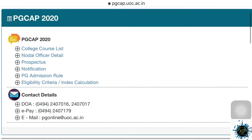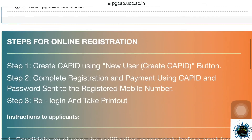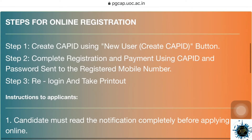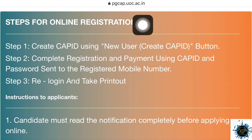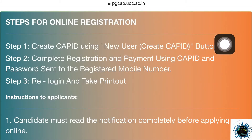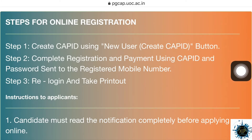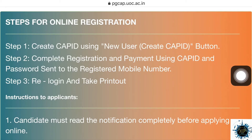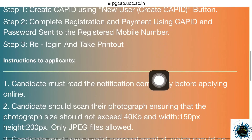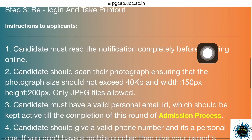Now you can register. What steps are there? They have a new user option. You can register as a new user. If you want to proceed, you can log in, then select the college and course, then submit and print out.